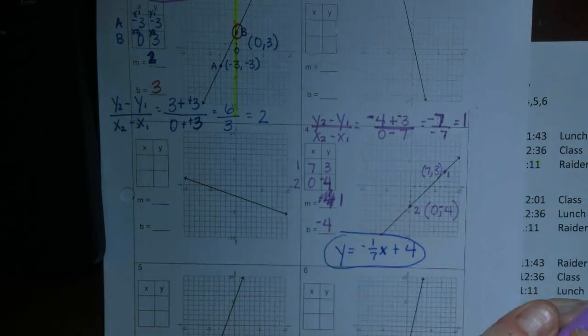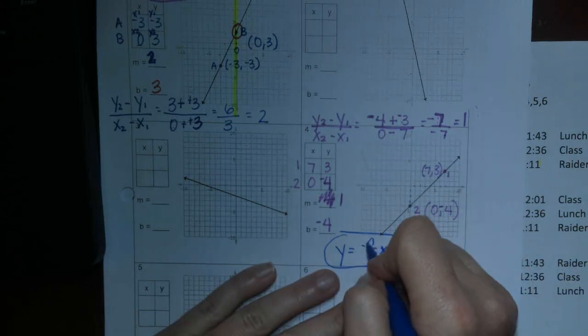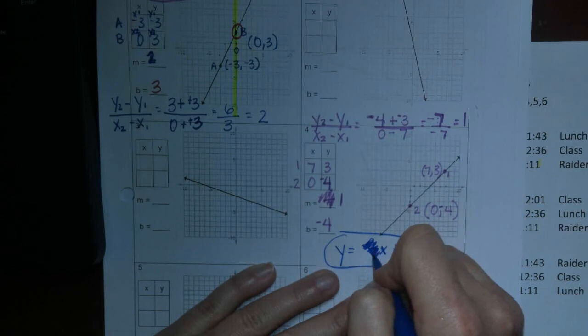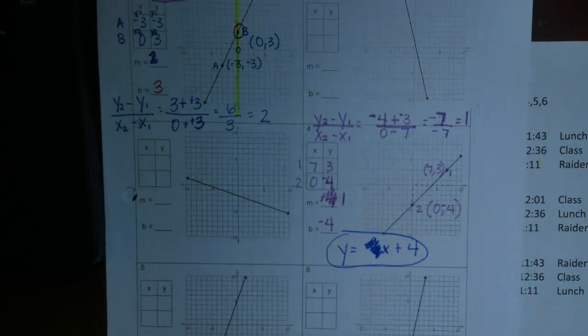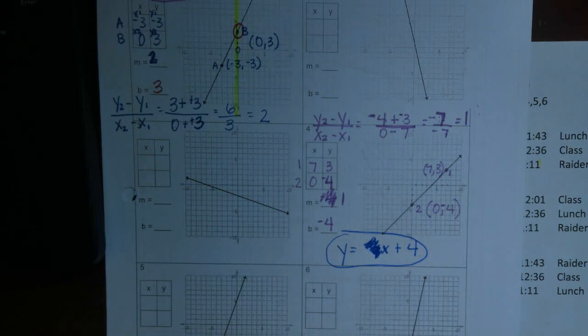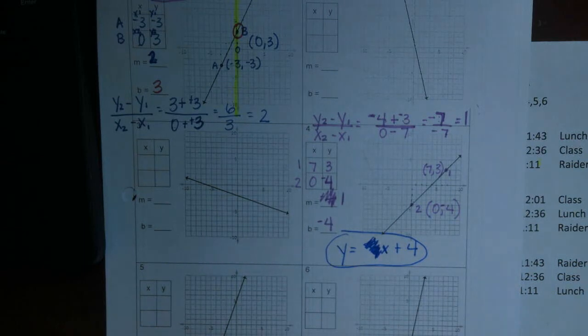So now our m is a positive 1. And this is just x plus 4. 1x plus 4 if you want. Okay. So, hope that you caught that. I'm so sorry about that mistake. But now you can see, I make mistakes too. We have to really slow down and make sure we are plotting our points correctly. But that's it.